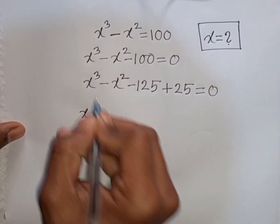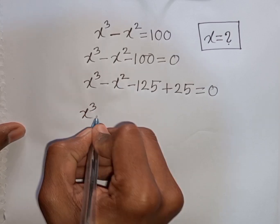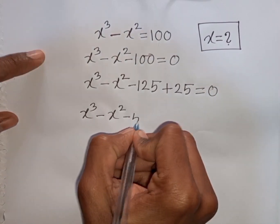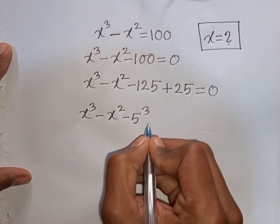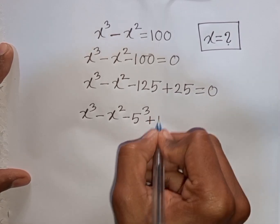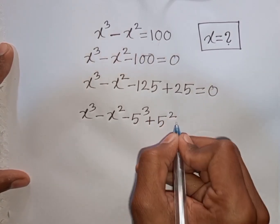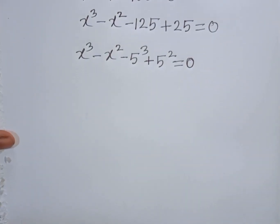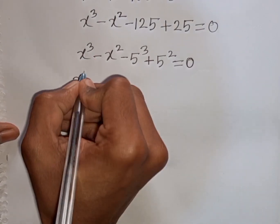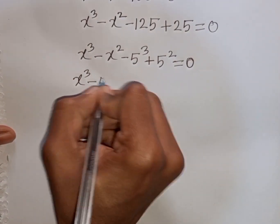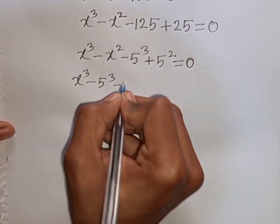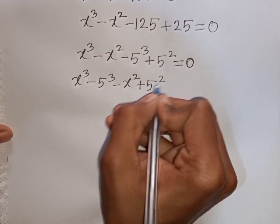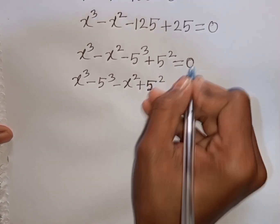Now we have x power 3 minus x power 2. Then minus 125 can be written as minus 5 cube. Then plus 25 is same as plus 5 square. Then is equal to 0. Now we can write here x cube then minus 5 cube, then minus x square plus 5 square, then is equal to 0.